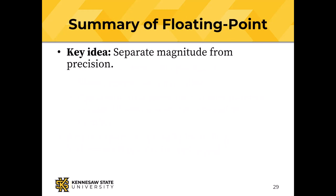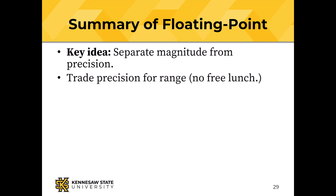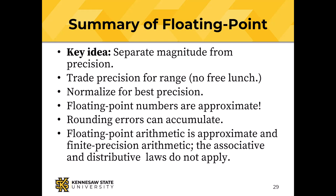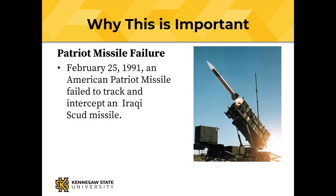Let's look at a summary of floating point. The key idea is separating precision from magnitude so that we can use two relatively small numbers to represent very big and very small numbers — we're trading precision for range. There is no free lunch. Floating point numbers should be normalized for best precision. Floating point numbers are approximate, which means you can't compare them for equality reliably. Rounding errors can accumulate. Floating point arithmetic is both approximate and finite precision. The associative and distributive laws do not reliably apply.